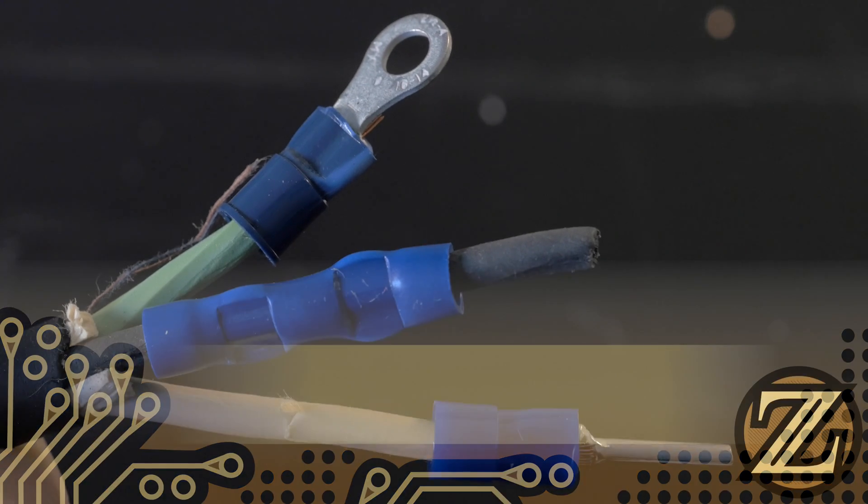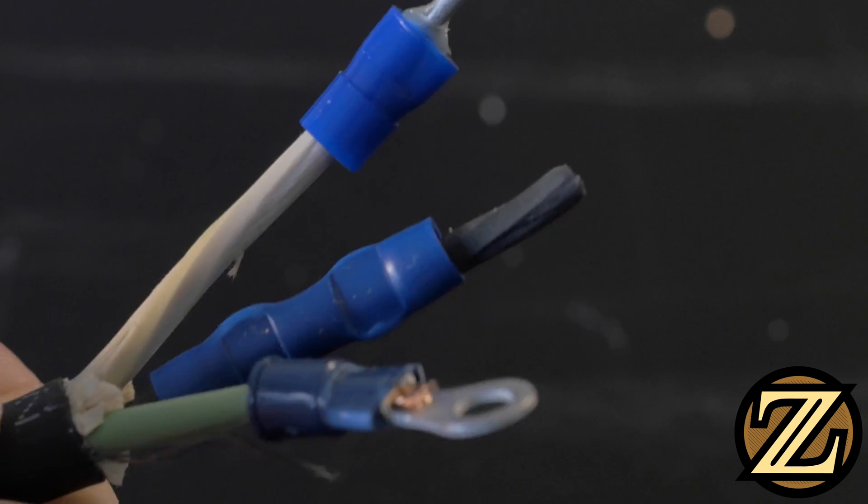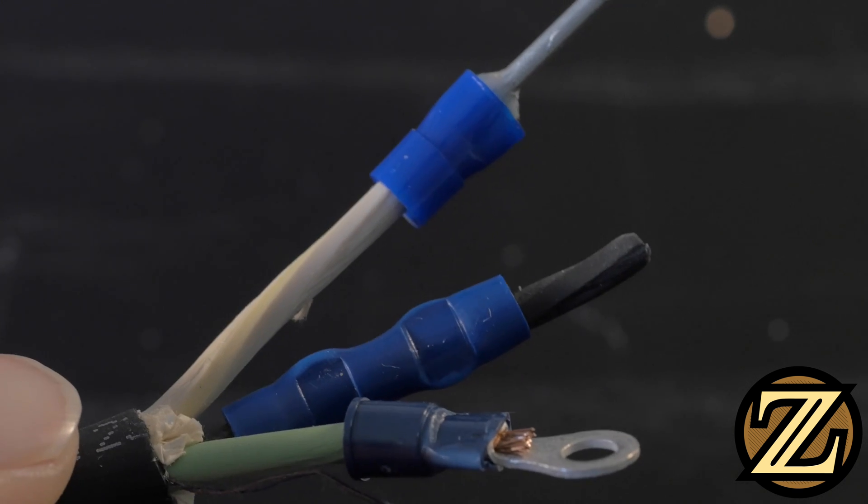If you find yourself working with heavier gauge wire, you may find crimping to be an easier and quicker solution than soldering. So if you're interested, check this out.